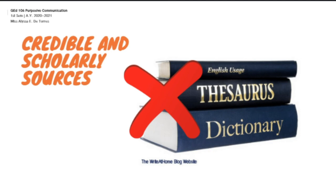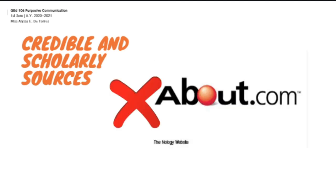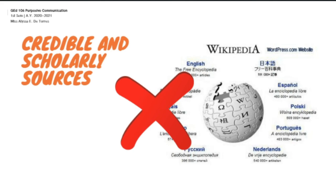On the other hand, you must refrain from using the following sources when writing an academic research paper: the dictionary, About.com, Wikipedia, and other wikis. The dictionary is a good source; however, it could not provide you with a more specialized definition of terms needed in an academic research paper. About.com could provide useful information such as novel ideas related to fashion, health, sports, and entertainment. However, such information is irrelevant to academic research writing. Wikipedia and other wikis are also good websites; however, the problem with them is that anyone can write and edit them. Hence, you cannot vouch for the credibility of the given information.